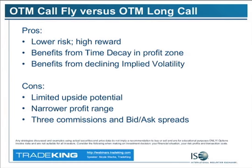On slide 34, we talk about the pros and cons of the call fly. The pro is that it's much lower risk — only $1 per contract versus close to $7 buying the call outright. You still have high reward; you can still make $9 on that trade — nine times your investment. Another benefit is that this trade actually benefits from the passage of time, unlike the long call. It also benefits from a decrease in implied volatility because you're selling twice as many of the 180 calls as you are buying the 170 or 190 calls.